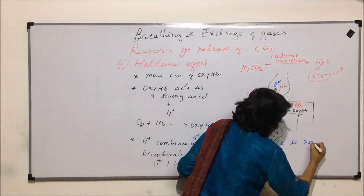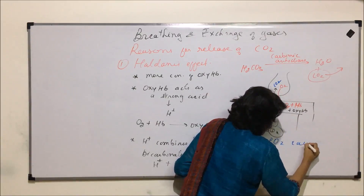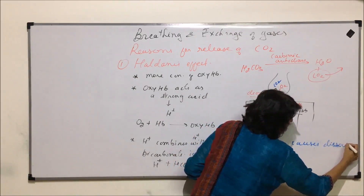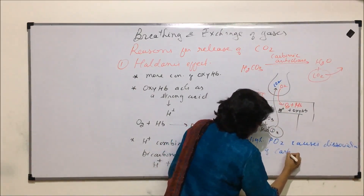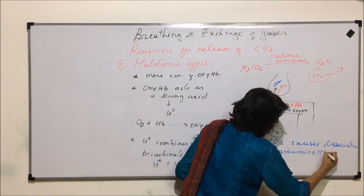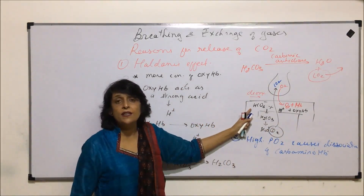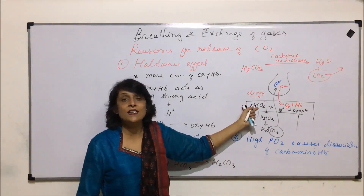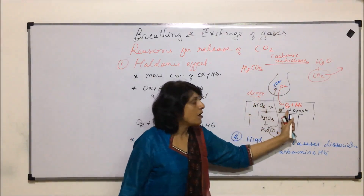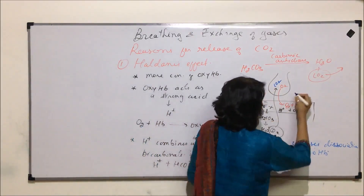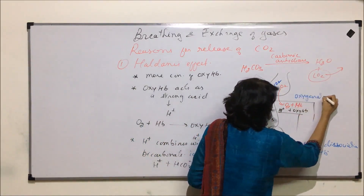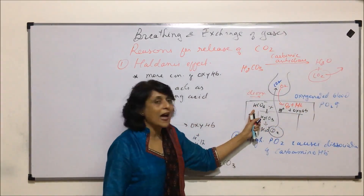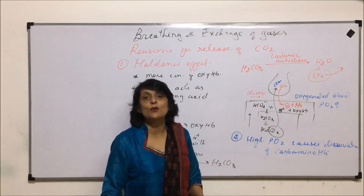The second reason for release of carbon dioxide is high partial pressure of oxygen, which causes dissociation of carbaminohemoglobin. One form in which carbon dioxide is transported is as bicarbonate ions, and the other form is carbaminohemoglobin. As oxygen diffuses in and PO₂ is high, the carbaminohemoglobin arriving here dissociates, releasing carbon dioxide. This is another reason why carbon dioxide is released.